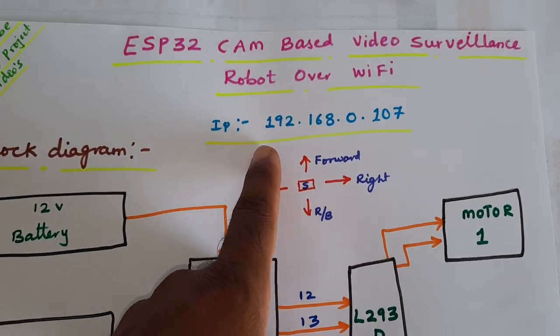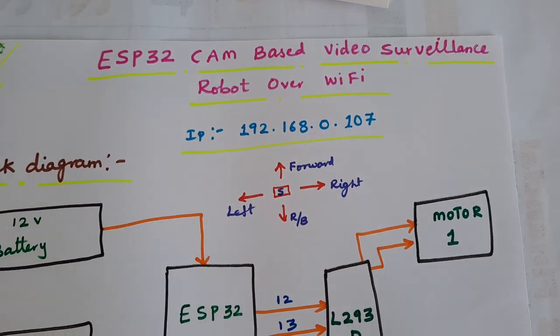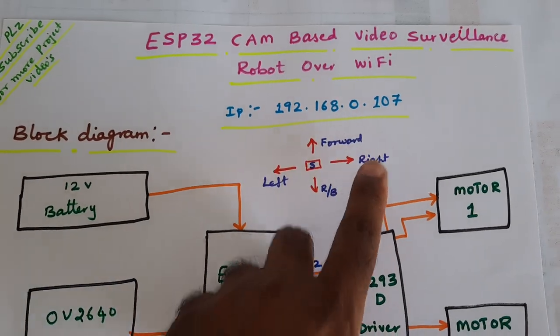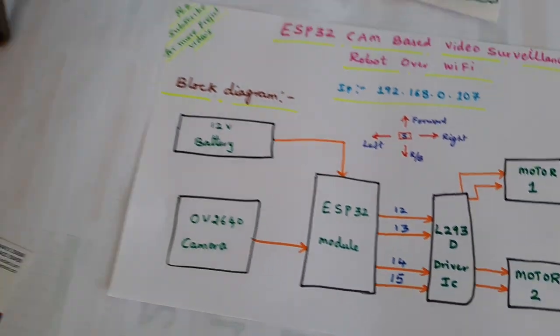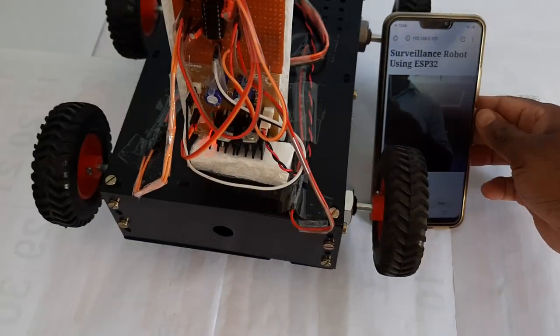We are using 192.168.0.107 Wi-Fi router IP address and the directions are forward, backward, left, right, and stop.